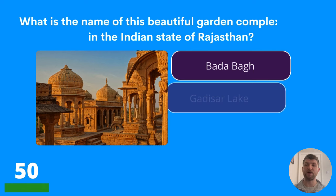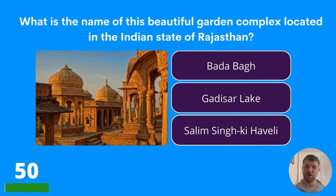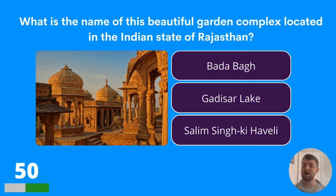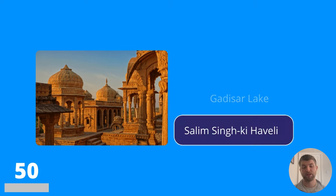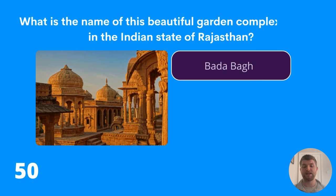Question fifty — we've hit the halfway mark! What is the name of this beautiful garden complex located in the Indian state of Rajasthan? Bada Bagh, Gadisar Lake, or Salim Singh Ki Haveli? The answer is Bada Bagh.